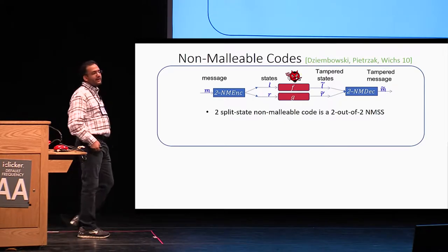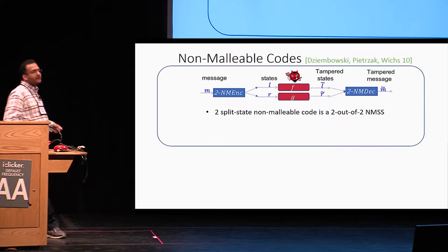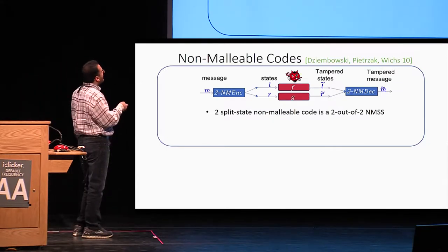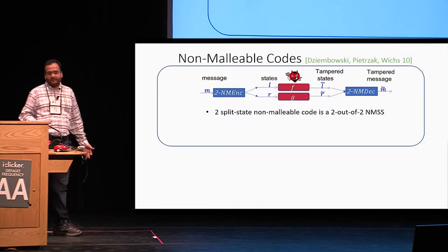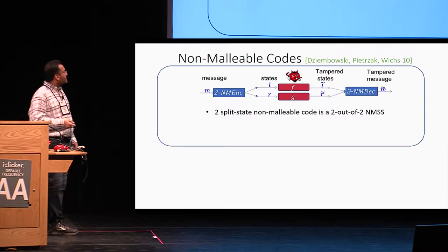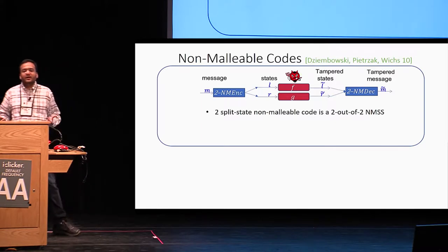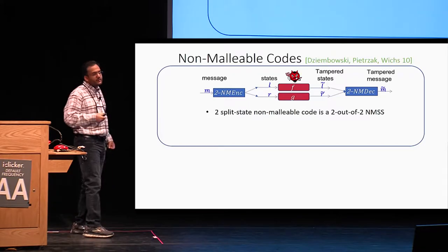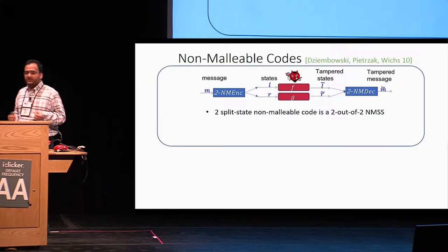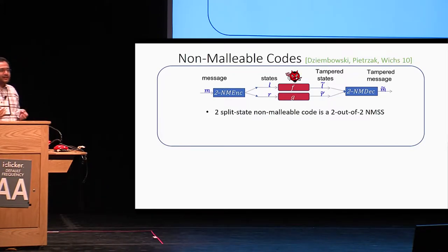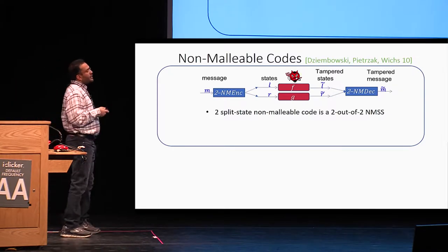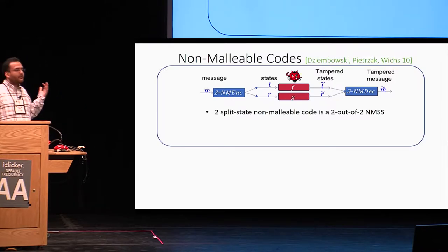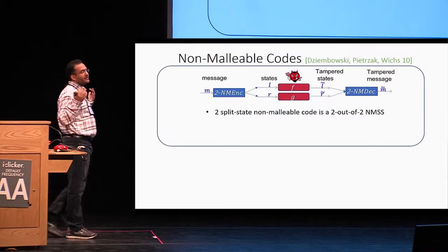The adversary tampers with each of these states individually, and finally we have the tampered message m-tilde. Very roughly, non-malleable codes require that the distribution of m-tilde should be independent of m. This guarantee seems similar to what we are hoping for. But the key difference between non-malleable codes in the split-state model and non-malleable secret sharing is the property of secrecy — non-malleable codes do not explicitly require secrecy of the message. In particular, one of the states could leak the message entirely.